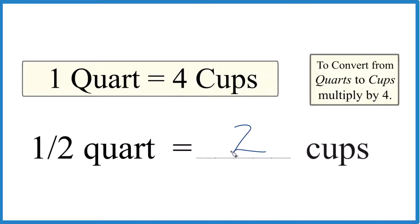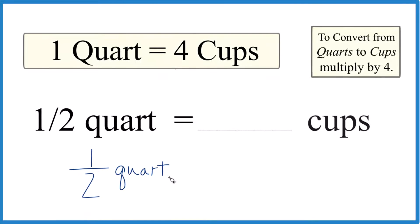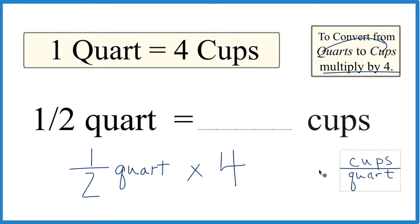There's another way we could do this, though. We could say if we have one half quart here, we could take, if we're going from quarts to cups, we could just multiply that by four. So we'll multiply by four here, and that's four cups per quart. So the units are cups per quart.